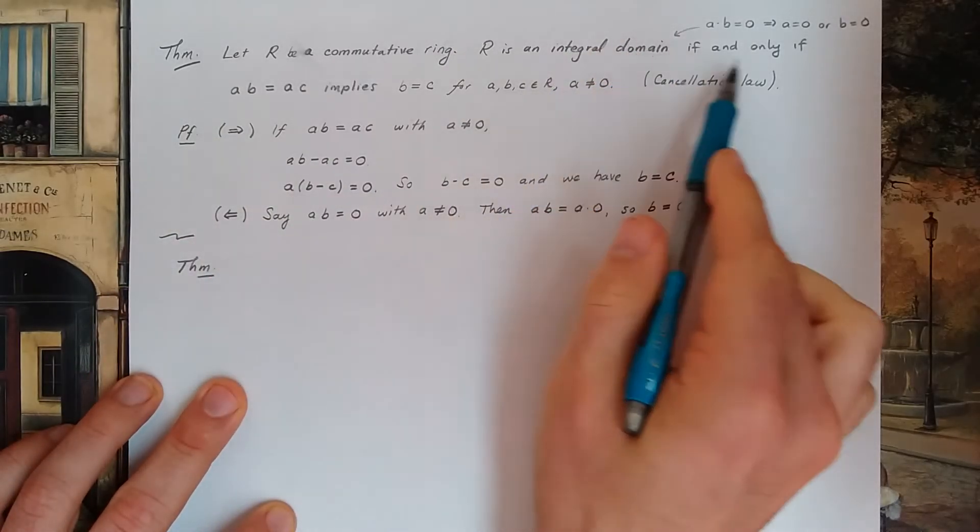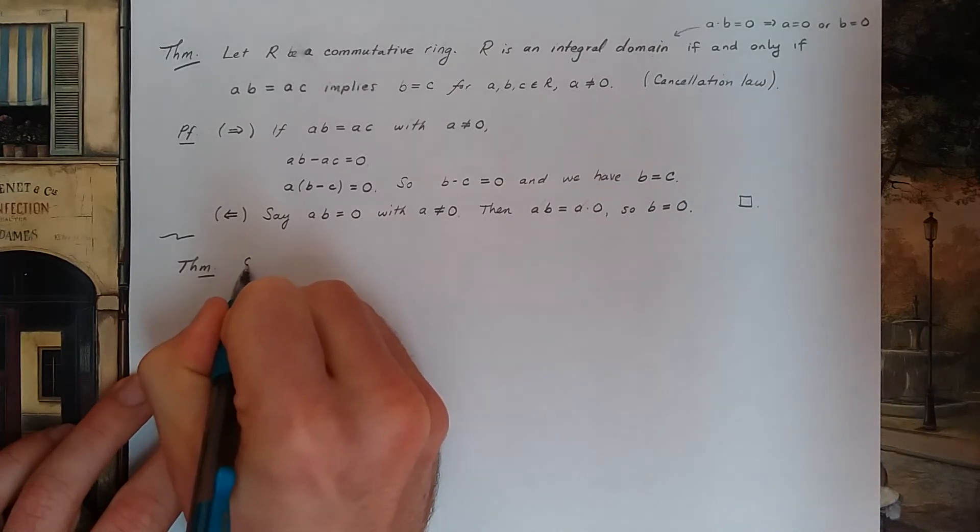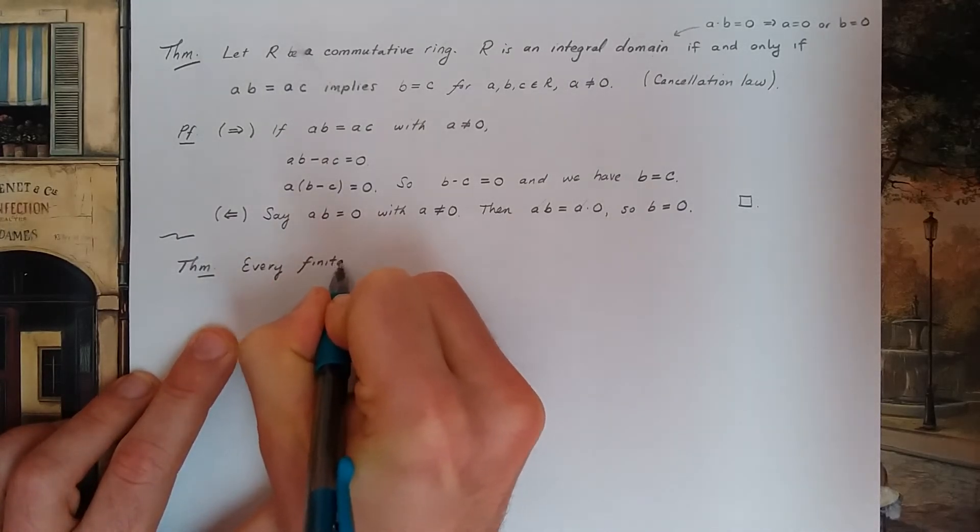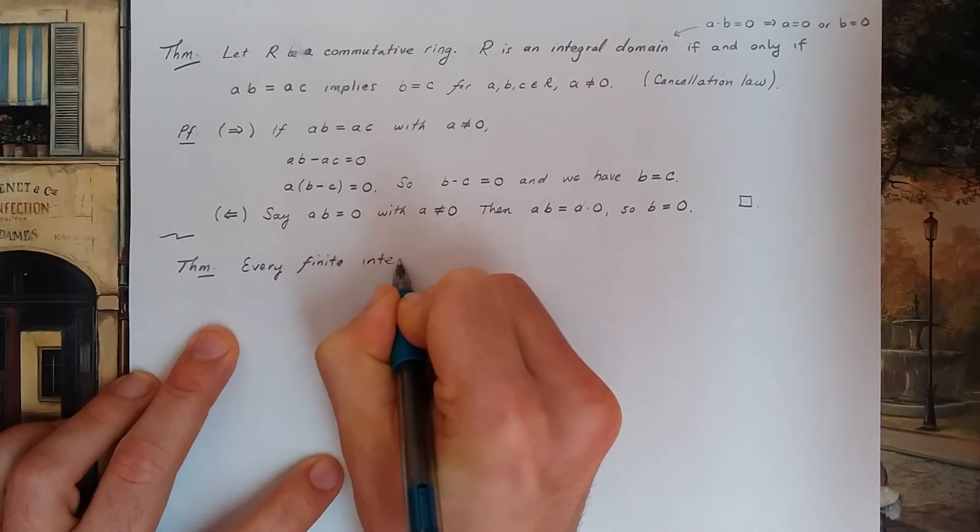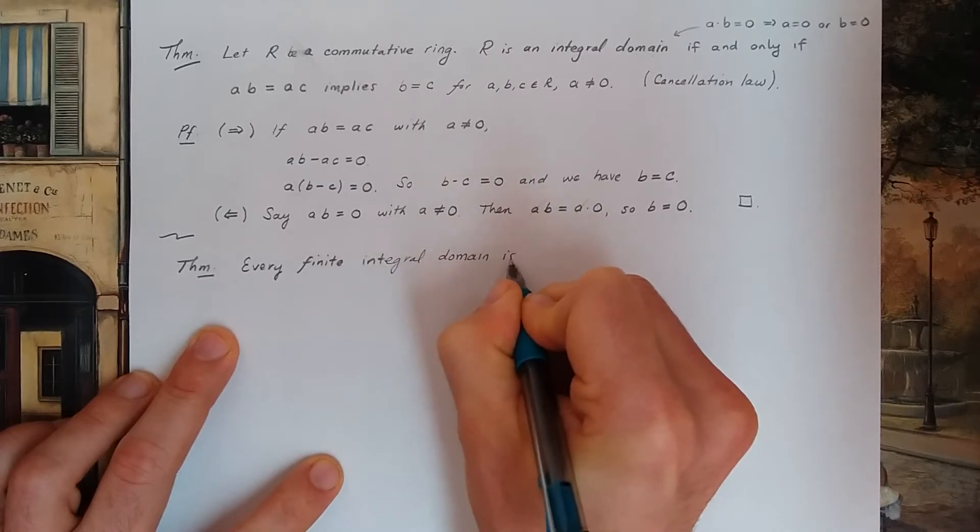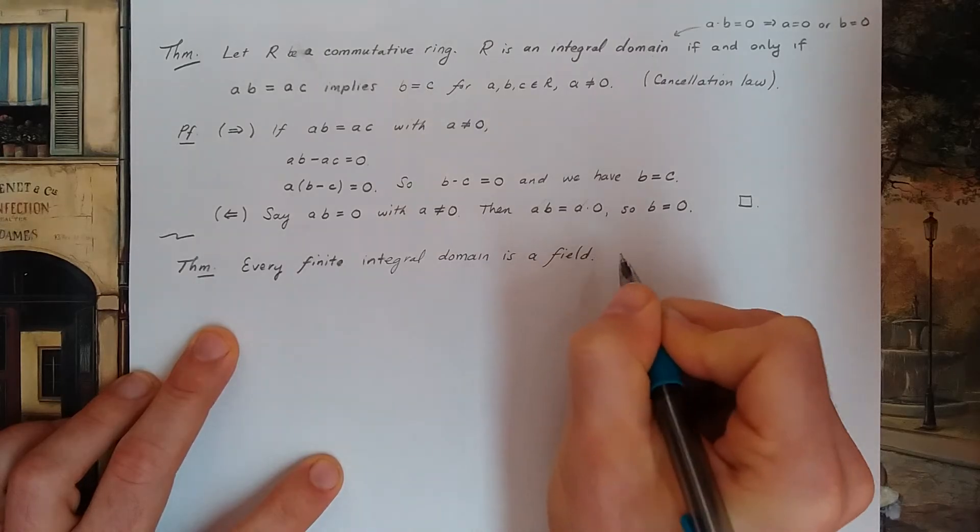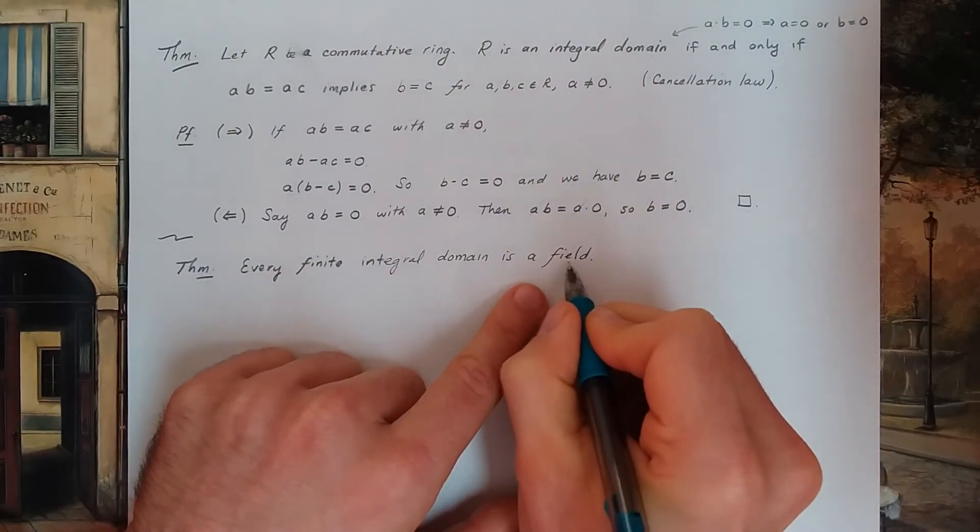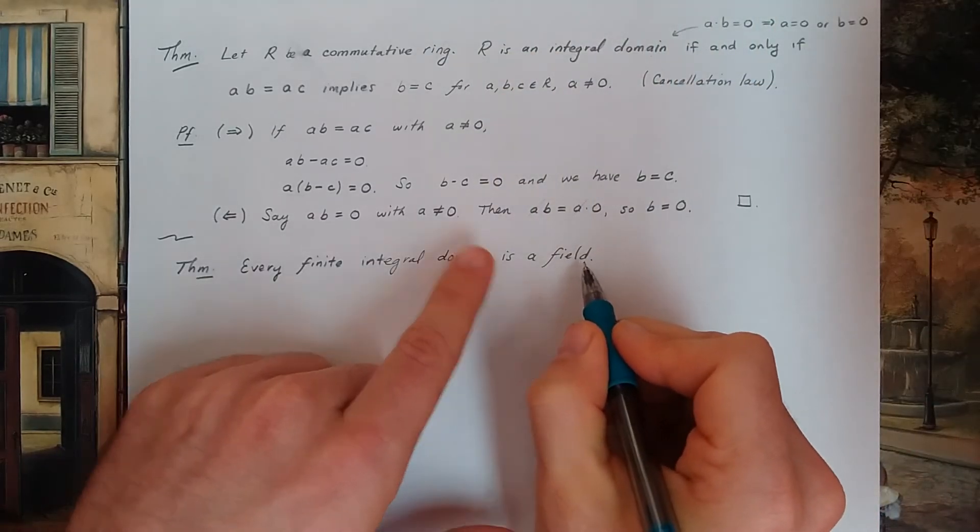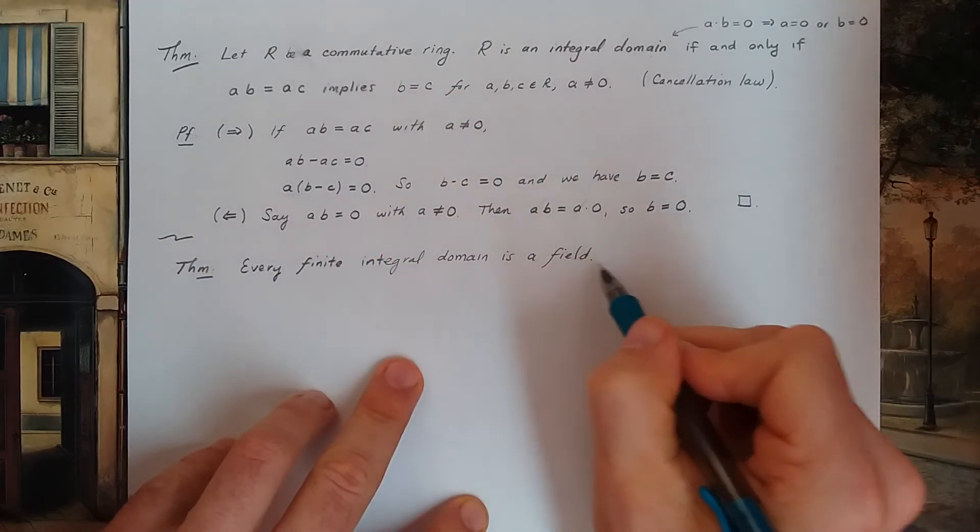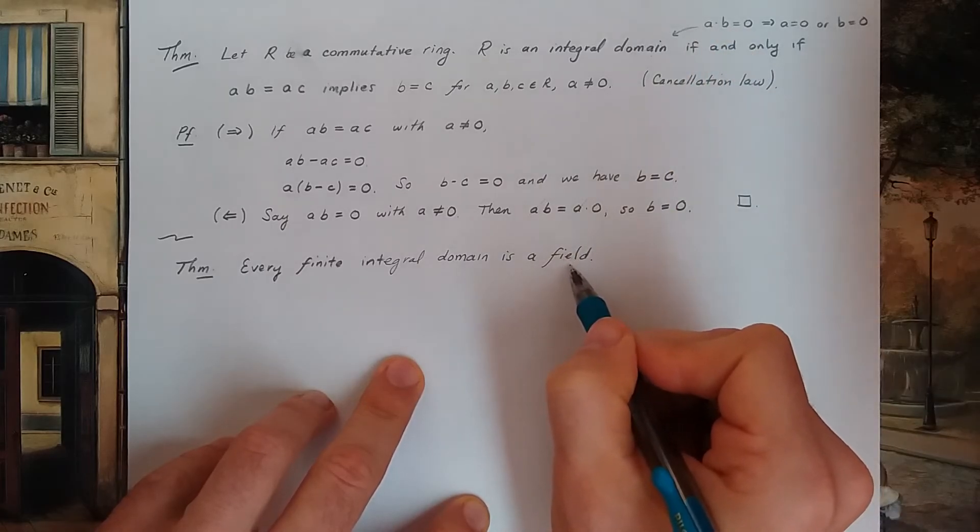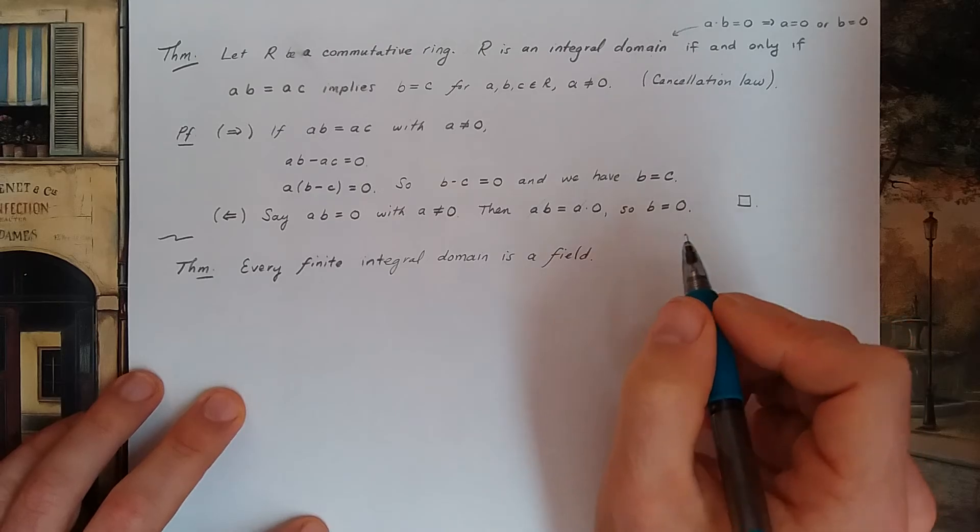The relationship between integral domains and fields is this: Every finite integral domain is a field. Remember what the definition of a field is. A field is a commutative division ring. So a commutative ring where I could divide by any number except for zero. So every nonzero element in my field has a multiplicative inverse. So here's the proof.